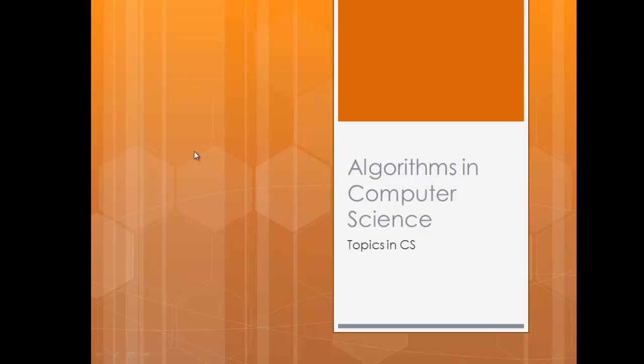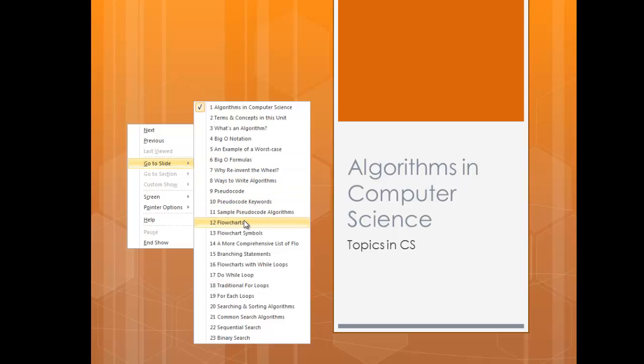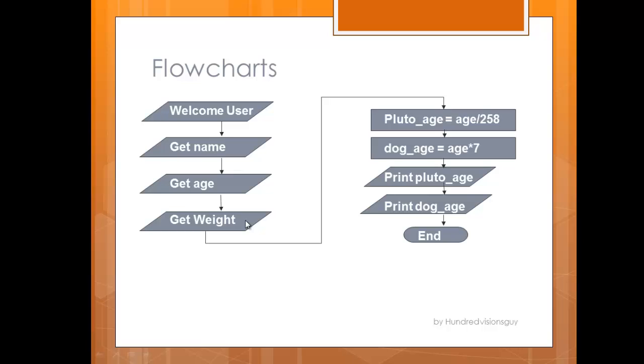Okay, we're continuing our presentation on algorithms in computer science, and we're about to get to some core CS algorithms, but before we do, I want to show you flowcharts. We've been talking about different types of ways of writing algorithms, and here's an example of a flowchart. Now, I had to break it into two sides here, and you just see an example here.